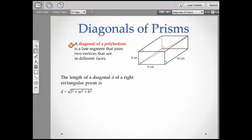Now, a diagonal of a polyhedron is a line segment that joins two vertices that are in different faces. Look right here. We've got this red dashed line starting down here in this corner, and it travels up diagonally to an opposite corner. So that's the diagonal of a polyhedron. And to determine the length of that diagonal, you use this formula right here.